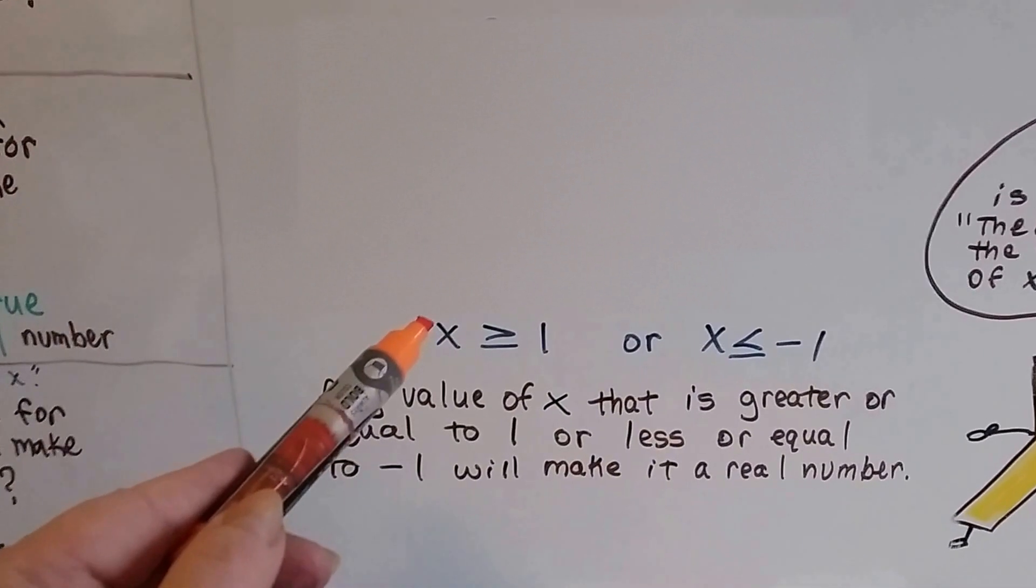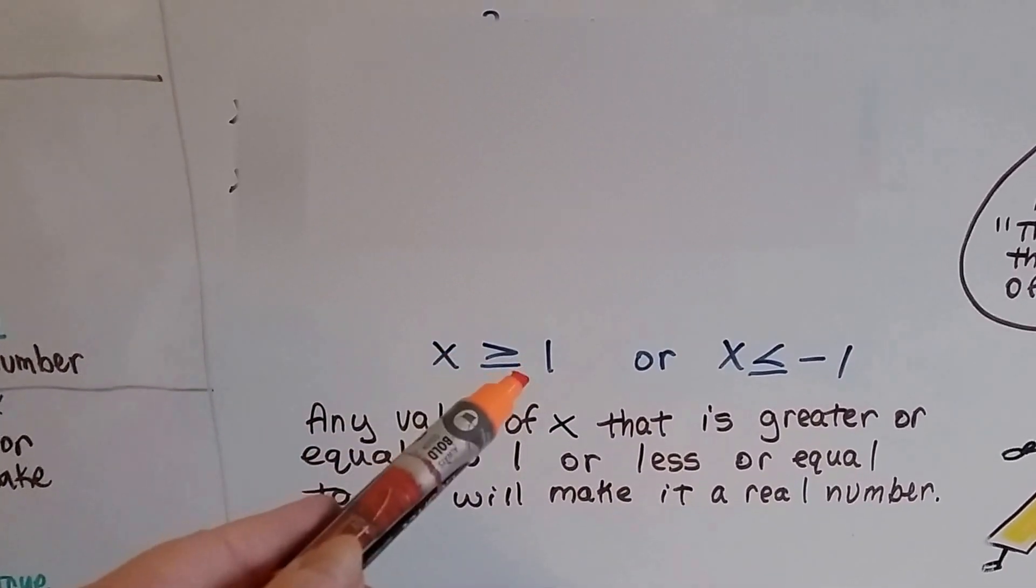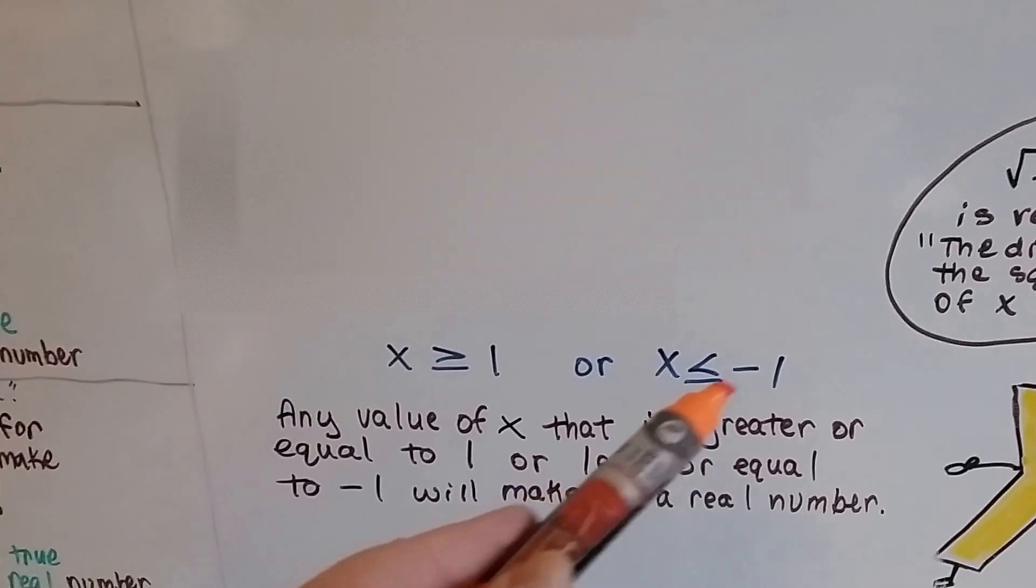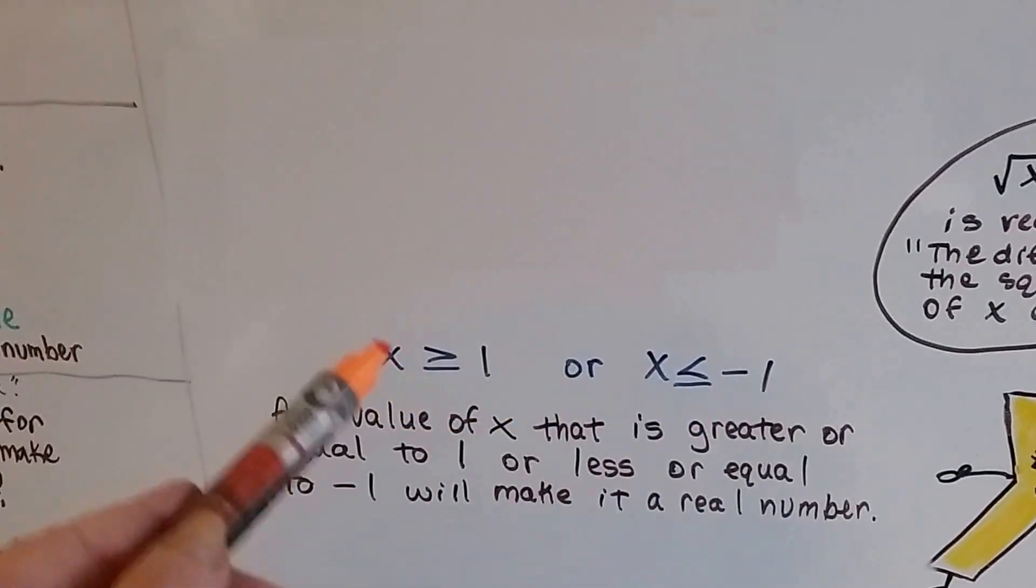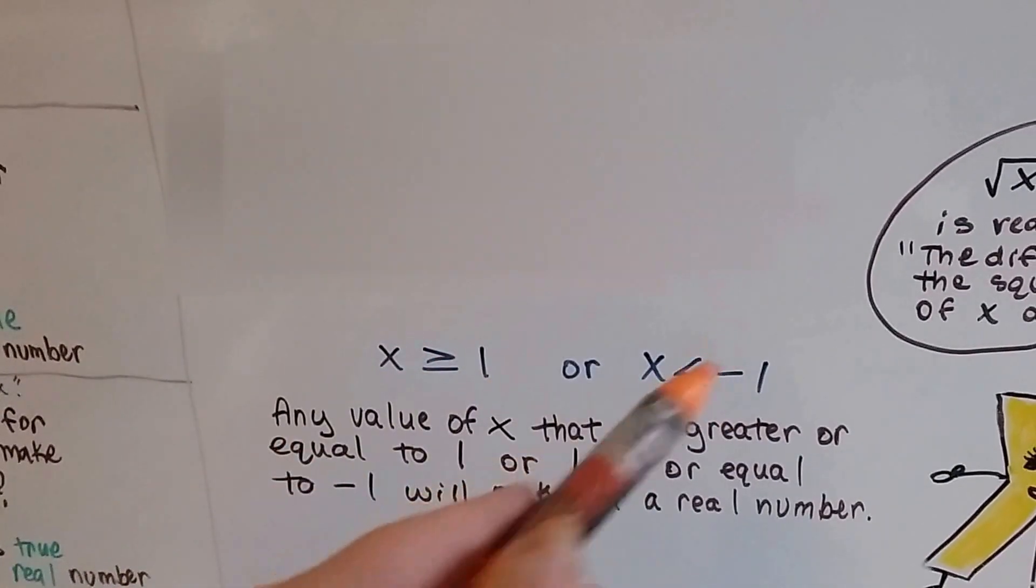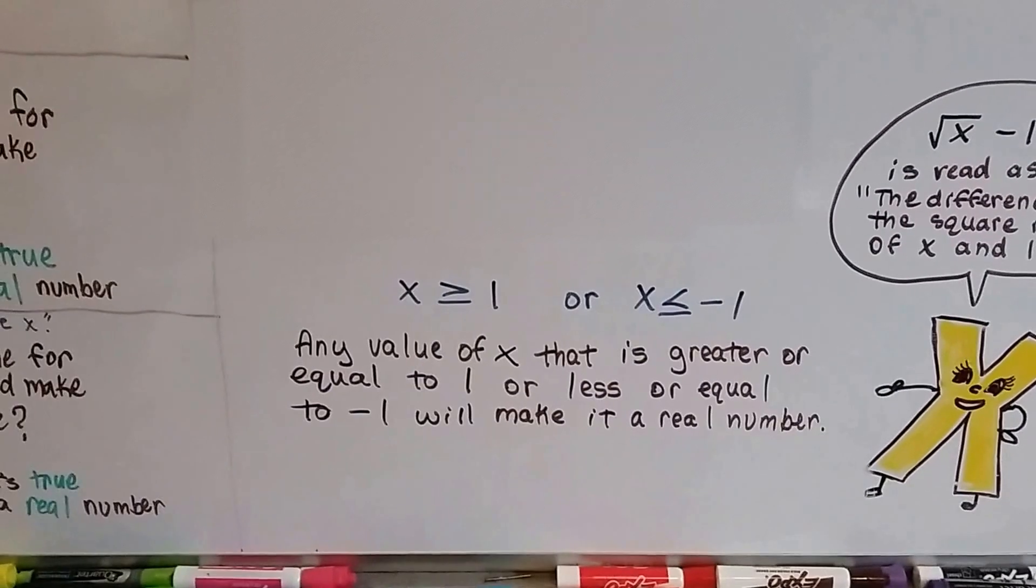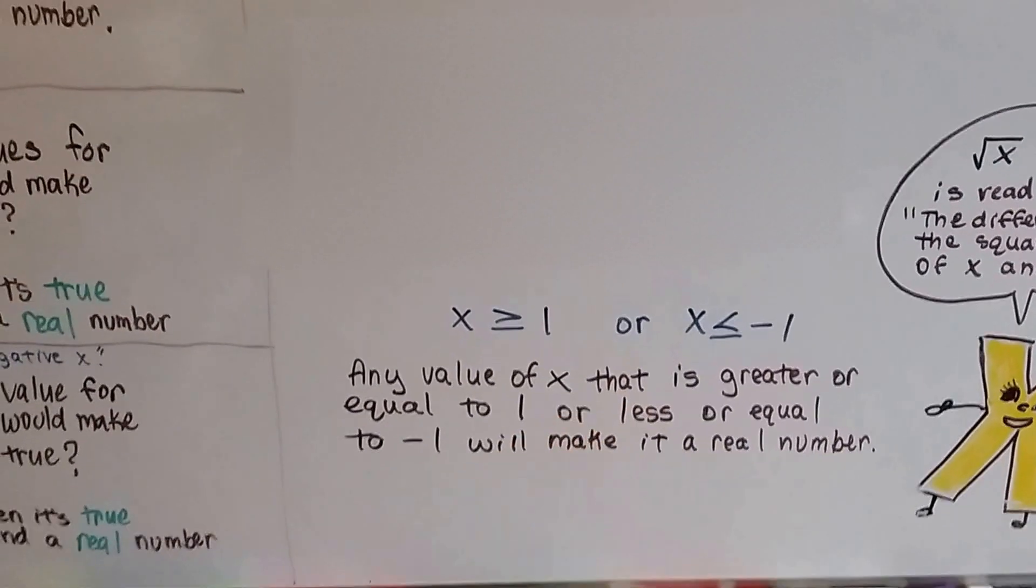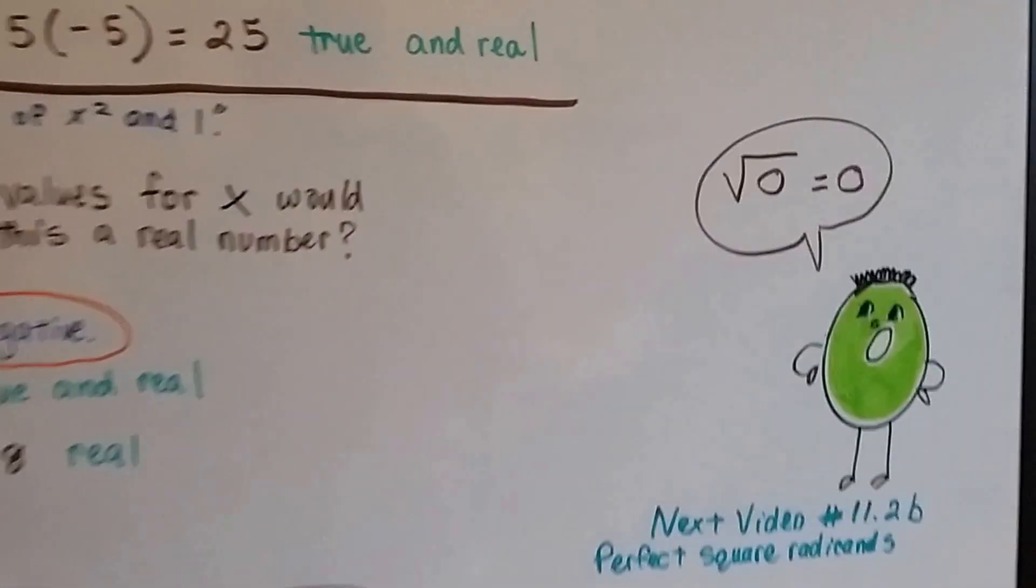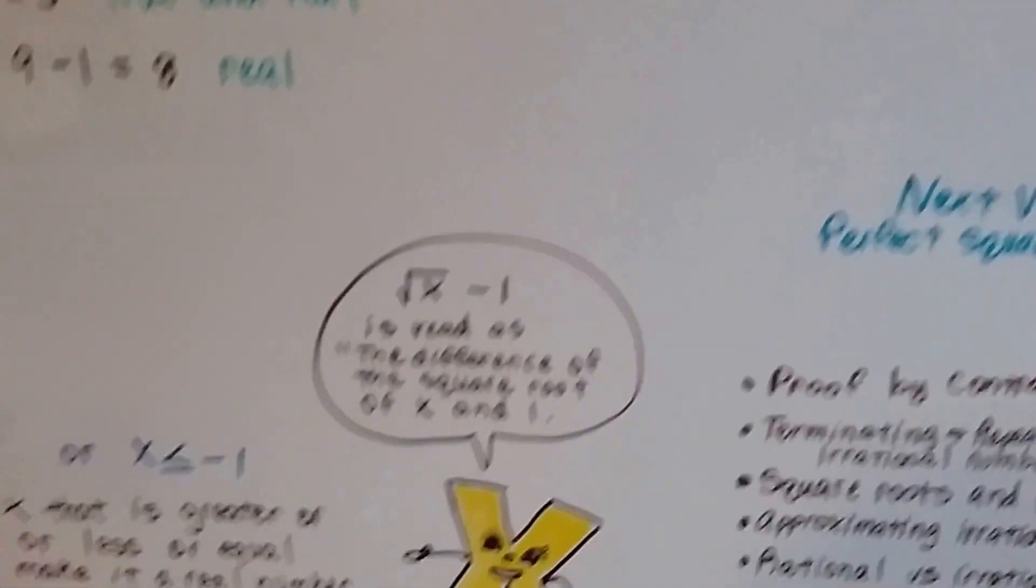So, x needs to be greater than or equal to 1, or x needs to be less than or equal to negative 1. And you can plug in numbers that follow this, and you'll see any value of x that's greater or equal to 1 or less or equal to negative 1 is going to make it a real number. And remember, the square root of 0 is 0, isn't it?